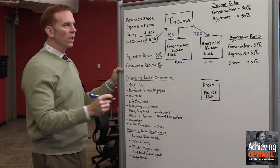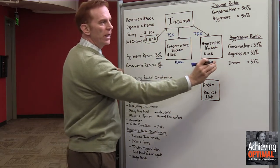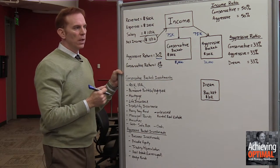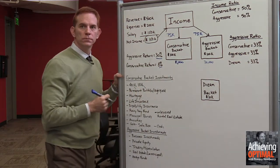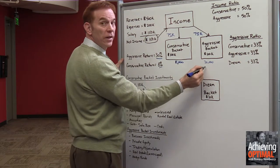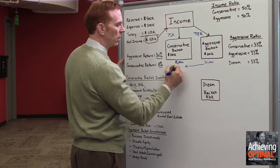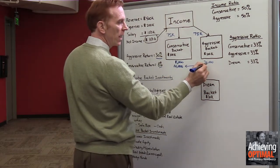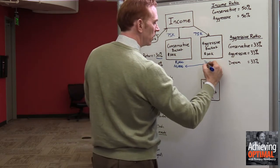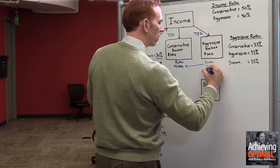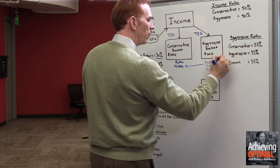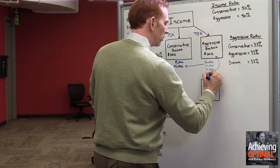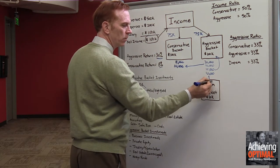Now we have our aggressive ratio — this is the ratio of how we divide our returns from the aggressive bucket. In this case, we used a third, a third, a third. So we take $10,000 from the aggressive bucket return and move it to the conservative bucket, adding another $10,000 there. We have $10,000 that gets reinvested back into the aggressive bucket. And then we have $10,000 that flows down into our dream bucket.